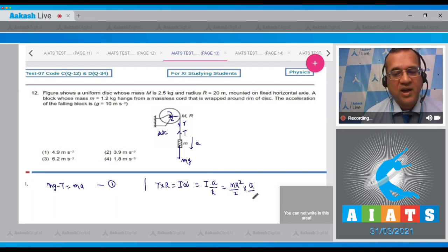It being a disk, moment of inertia will be Mr² by 2, so a by r. So what do you get? This is equal to Mra by 2.